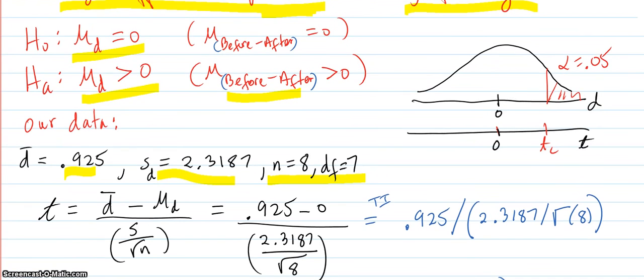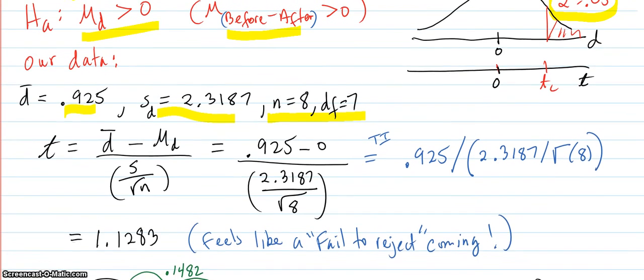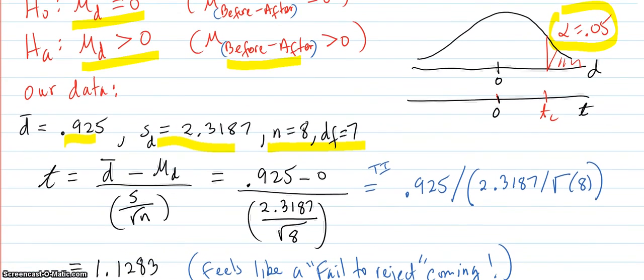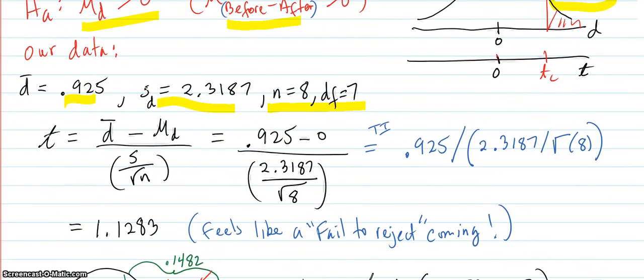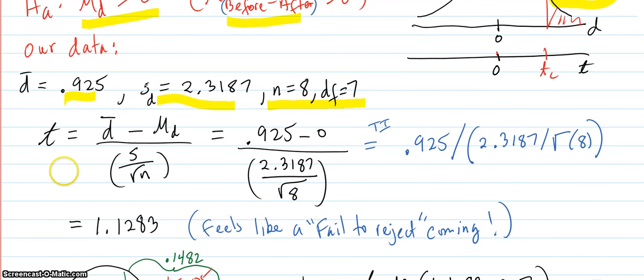So our data is the same as it was before. And we draw our picture. We're testing in the right tail, alpha 0.05. And we got a t-critical down there, but we're going to do the p-value comparison method so we're not really going to have to find a t-critical.